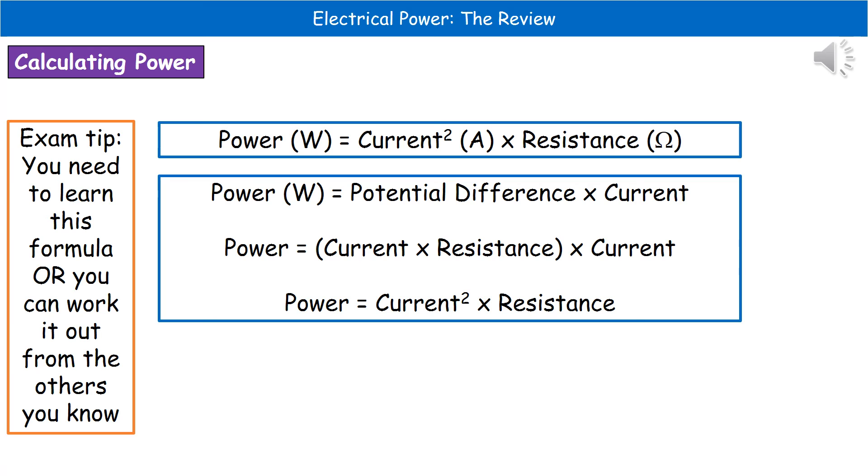Whatever is easiest for you is the way to do this. If you're really good at being able to rearrange equations and substitute bits in, then this one might be the way to do it. However, if you're far better at just learning things off by heart, then just remember that power is our current squared times resistance.